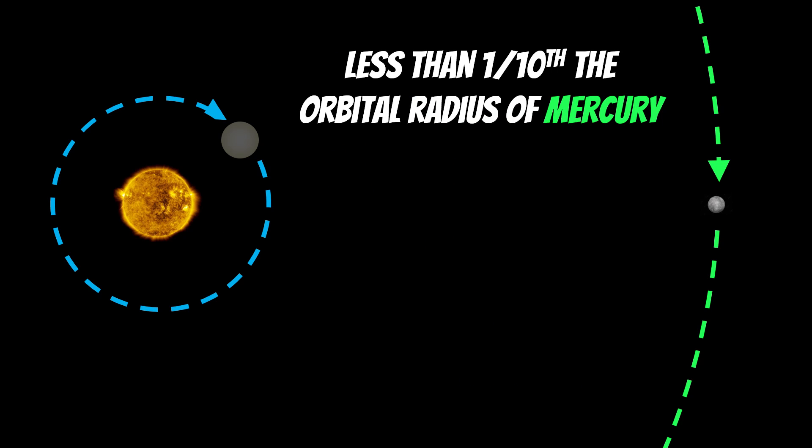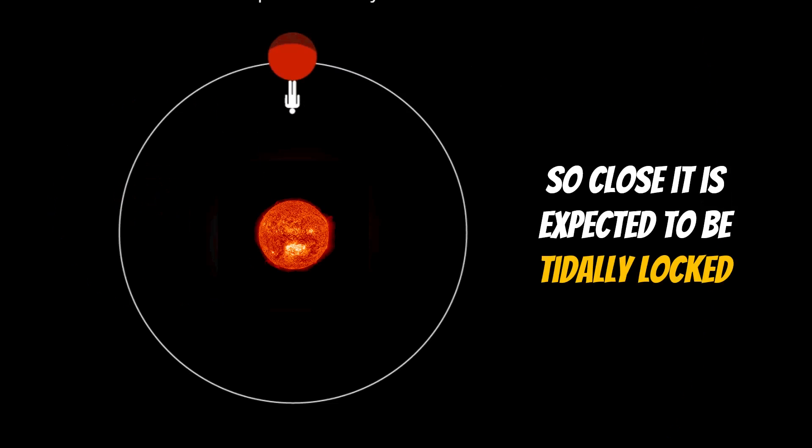To put that into context of our own solar system, Mercury is our closest planet to the Sun, and this planet orbits less than one-tenth the orbital radius of Mercury. So Mercury is quite hot, it's very close to our star, but TRES-2b is one-tenth the distance to its Sun compared to Mercury. This highlights how hot it's going to be and how close it is to its star.